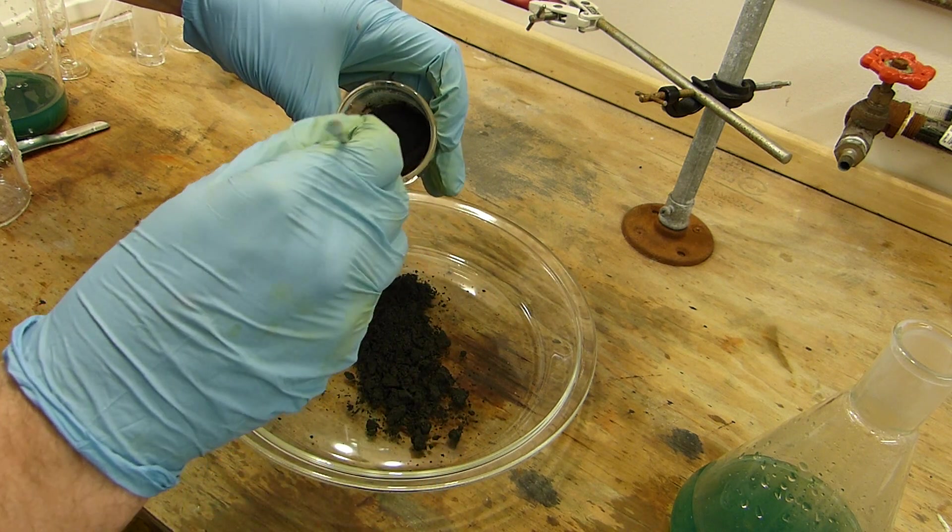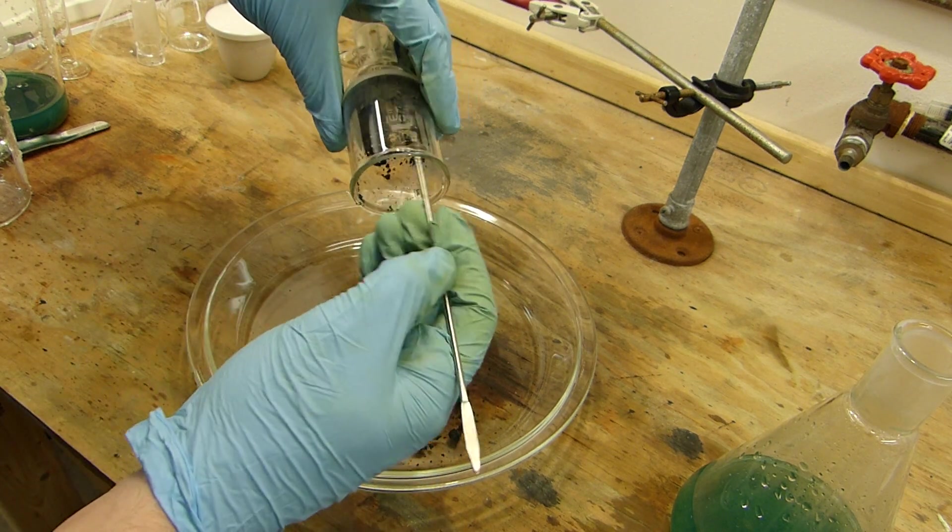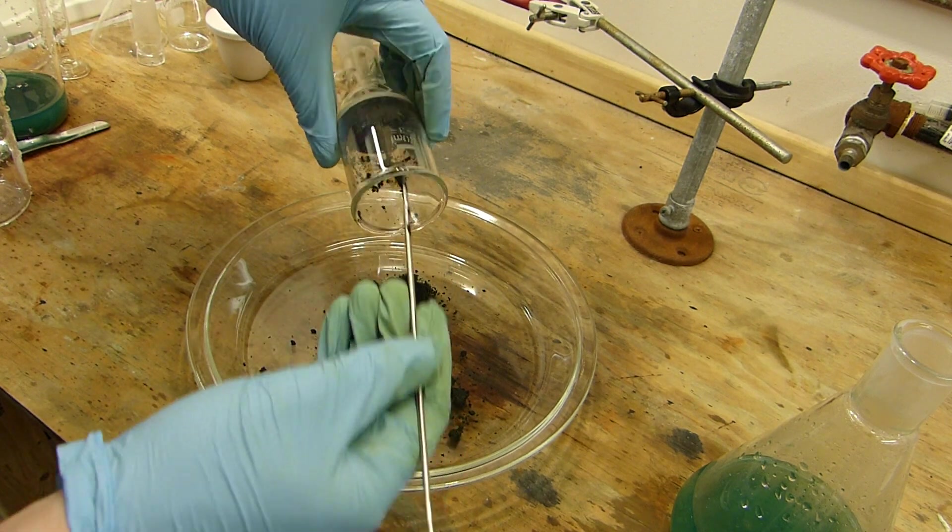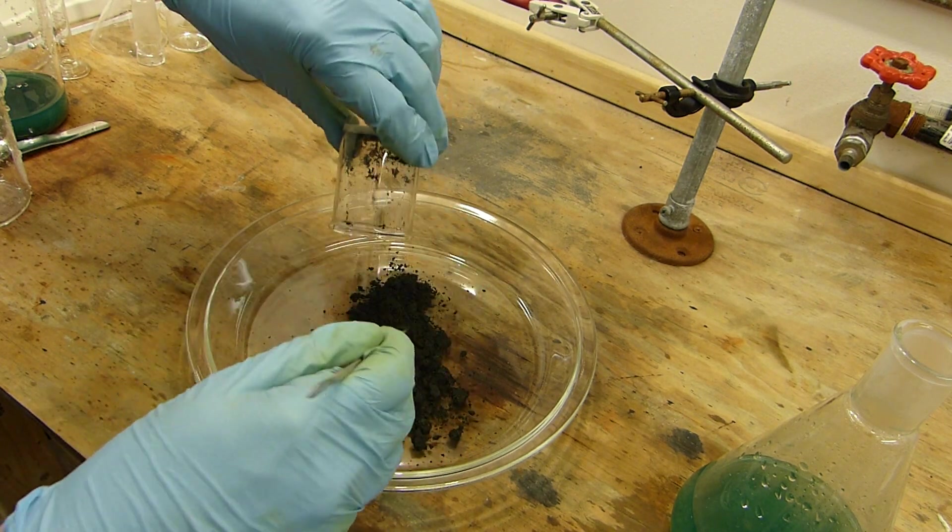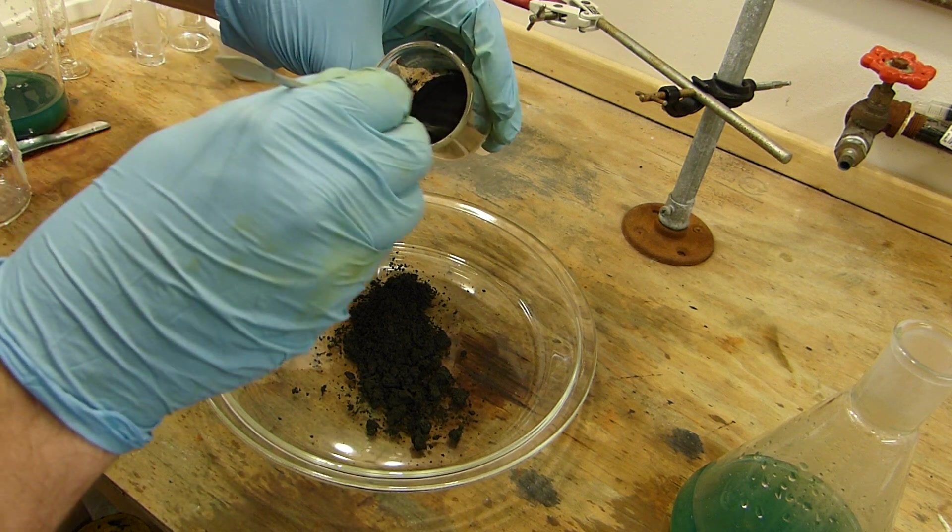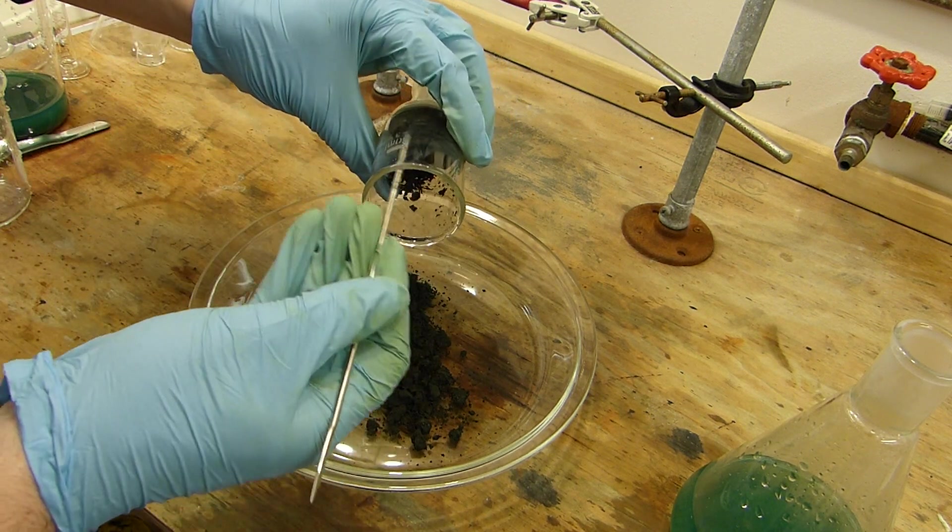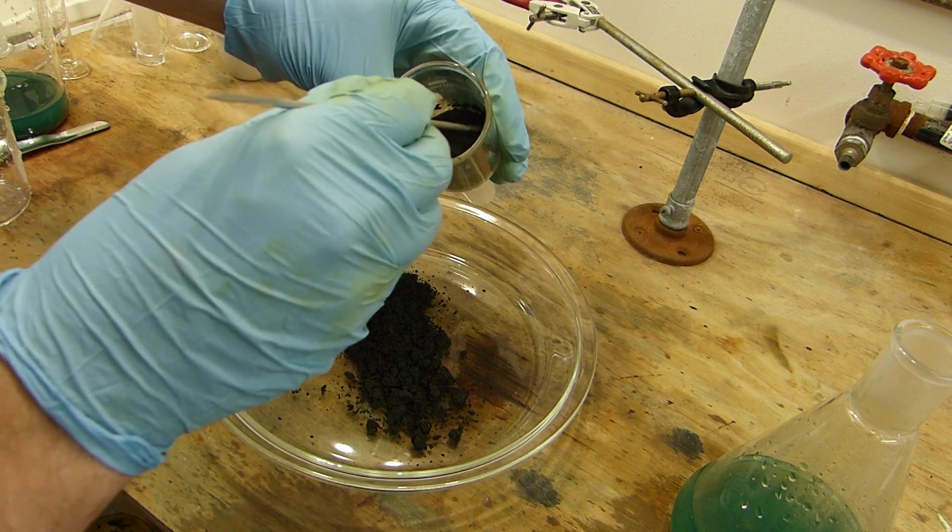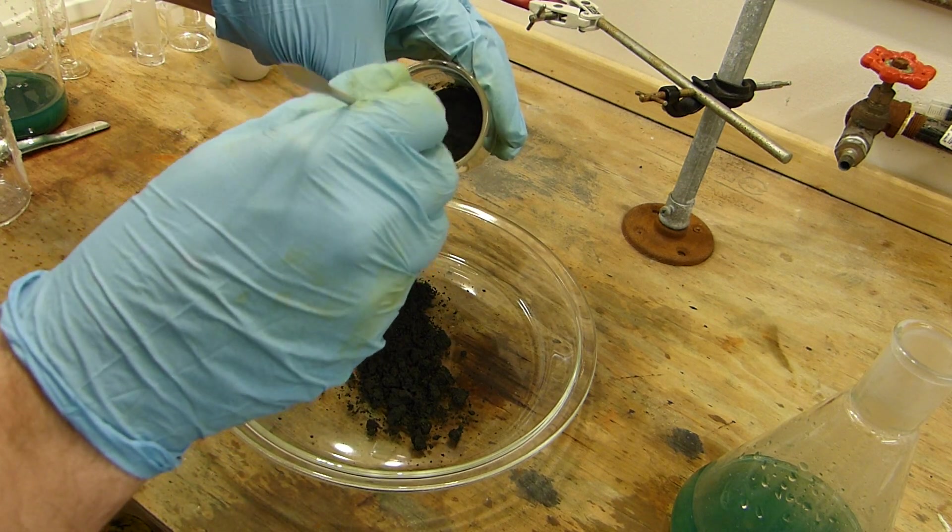And again, when you're doing this, always be careful. You don't want to damage your frit, so if at all possible, don't scrape your frit with metal instruments like this. I'm just barely touching it. It does make a nasty noise, but if you do it too hard, you'll dig into the glass and weaken the frit, and then you can potentially have it implode on you while you're vacuum filtering.